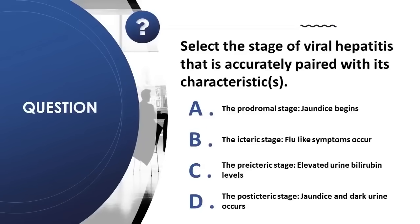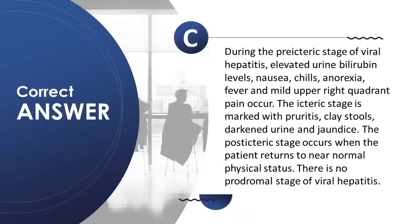Question 7: Select the stage of viral hepatitis accurately paired with its characteristics: A) prodromal stage — jaundice begins; B) icteric stage — flu-like symptoms; C) pre-icteric stage — elevated urine bilirubin levels; D) post-icteric stage — jaundice and dark urine. Correct answer is C. During the pre-icteric stage, elevated urine bilirubin, nausea, chills, anorexia, fever, and mild upper right quadrant pain occur. The icteric stage is marked with pruritus, clay stools, darkened urine, and jaundice. The post-icteric stage occurs when the patient returns to near-normal physical status. There is no prodromal stage of viral hepatitis.